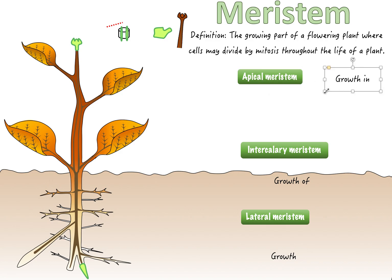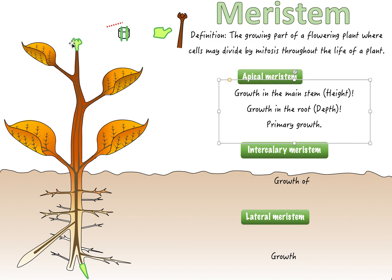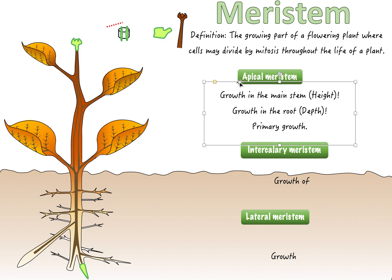The apical meristem in the main stem causes growth in height, allowing the plant to be taller. The purpose of being taller is to get closer to the sun and do more photosynthesis — for example, if a neighboring plant is bigger and shadowing you, growing taller via the apical meristem lets you get above it and access more sunlight.